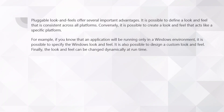The pluggable look and feel offers several important advantages. It is possible to define a look and feel that is consistent across all platforms. Conversely, it is possible to create a look and feel that acts like a specific platform — for example, if you know that an application will be running only in a Windows environment, it is possible to specify the Windows look and feel. It is also possible to design a custom look and feel. Finally, the look and feel can be changed dynamically at runtime. As mentioned, it is platform independent, so on one platform you can make it look one style and on another platform another style. You can also design your own graphic style and add it on, and by adding it on, it doesn't affect any aspects of the program and the code runs without any errors.